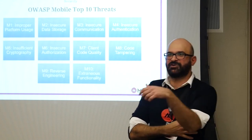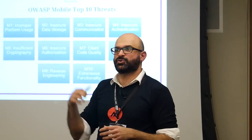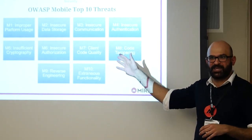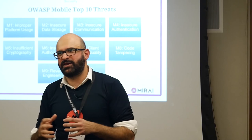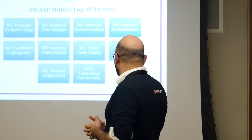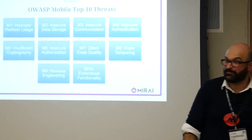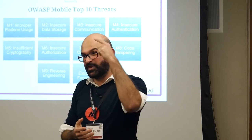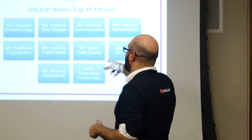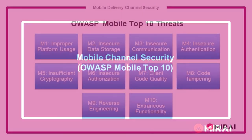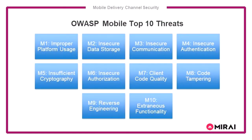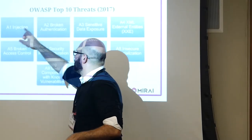OWASP also publishes a Mobile Top 10 because the mobile channel has intricacies different from web or traditional web client applications. For mobile, improper platform usage is number one, followed by insecure data storage. You should take these into account when building test cases and strengthening your application. For traditional web applications, injection is the biggest threat — SQL injection and other types like LDAP injection and XML injection happen so frequently. Proper input validation mitigates so many of these. Broken authentication is also a major concern. These lists help developers cover the most occurring issues in their respective channels.